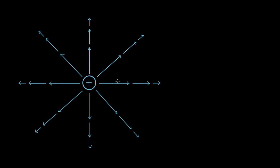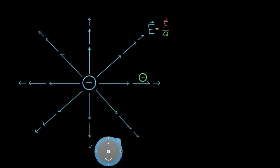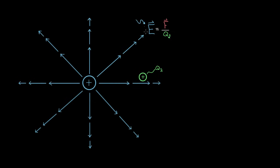We know that electric charges create electric fields, and the definition of the electric field is the amount of force per charge — some charge that finds its way into this region. If we took the force on this charge, Q2, divided by Q2, that would be the electric field at that point in space. It would be useful to have a formula that lets us figure out the electric field that Q1 is creating at that point in space without even referring to Q2 at all.